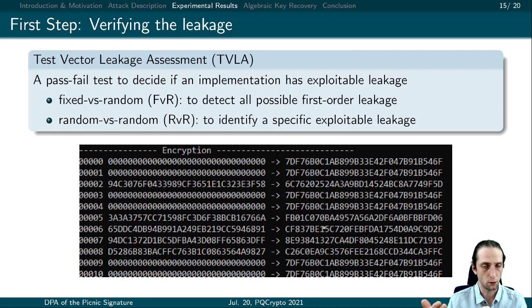The second one is random-versus-random. In this case, we always process random data. However, the classification depends on a single bit inside the implementation. Therefore, the second method is used to observe a specific target in an implementation. As our leakage verification, we use the random-versus-random test.